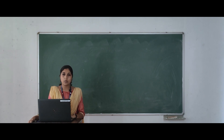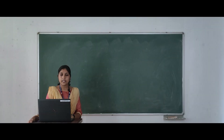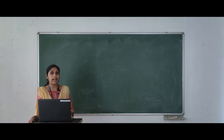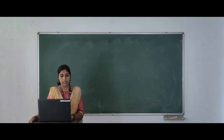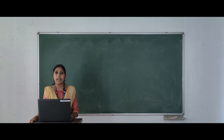Next we can discuss about what is product lifecycle. It is the length of time from a product first being introduced to a consumer until it is removed from the market. In other sense, a product passes through different stages, and these all stages collectively known as product lifecycle. The concept of product lifecycle was popularized by American economist Theodore Levitt in 1965.